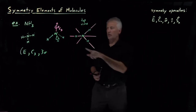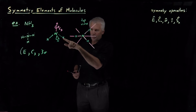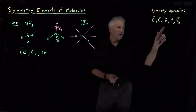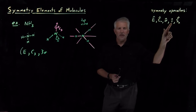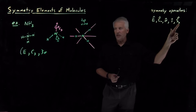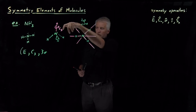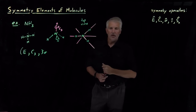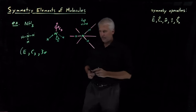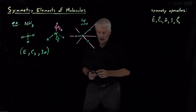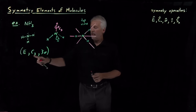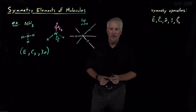Does ammonia have an inversion center? No. Wherever the center of the molecule is, if I invert some of the H's through the center and out the other side, there's no H there for it to land on. So inversion will modify the orientation of the molecule — there's no inversion center. There are also no improper rotations. So the list of symmetry elements for the ammonia molecule is: an identity, a C3 rotation, and three different mirror planes.